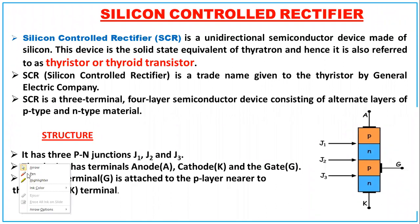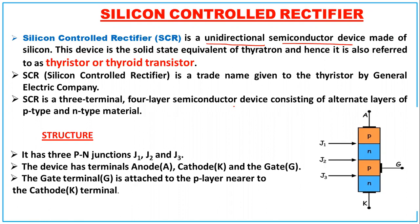Silicon Controlled Rectifier, or SCR, is a unidirectional semiconductor device — current flows in one direction. Made of silicon, this device is called the solid-state equivalent of the thyratron, and hence it is also referred to as thyristor or thyroid transistor. SCR has two transistors inside it. The name 'Silicon Controlled Rectifier' was given by GE — General Electric.